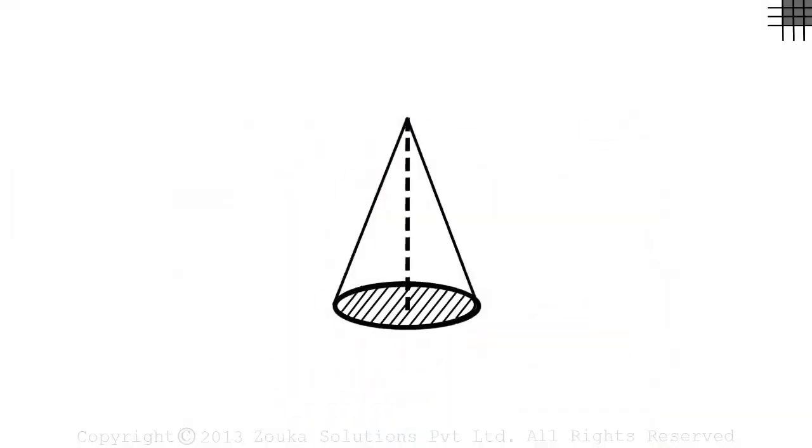We have a right circular cone with a shaded base and we will try to derive a formula for the surface area of a cone.